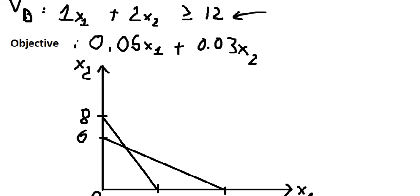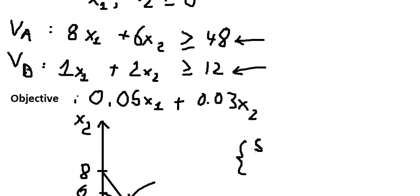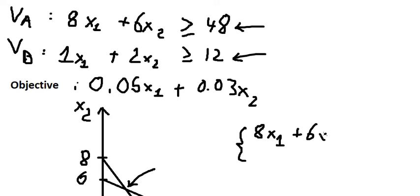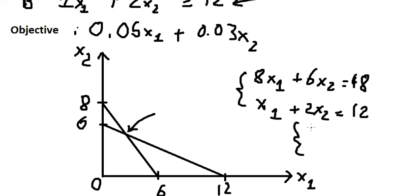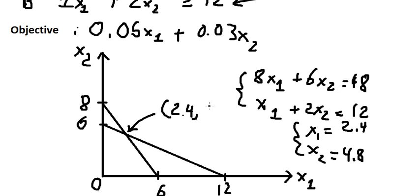We need to find the intersection point here, so we need to solve the system of equations. We get s1 equals 2.4 and s2 equals 4.8.